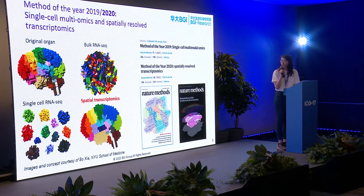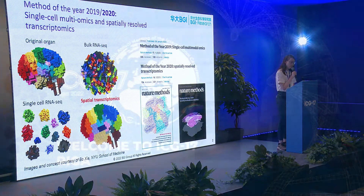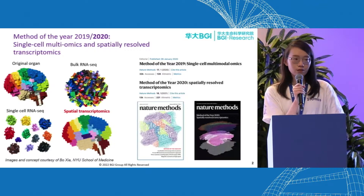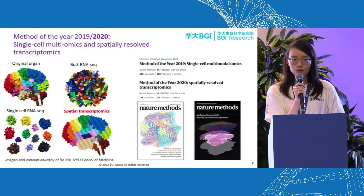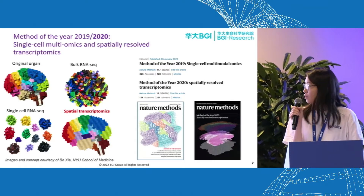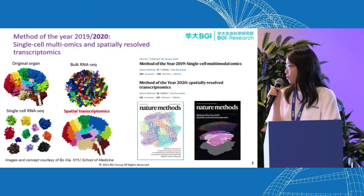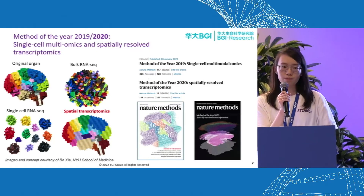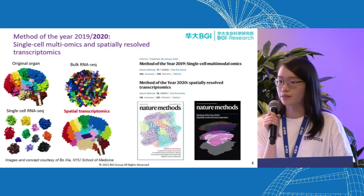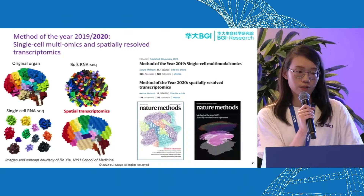So just to give a very quick introduction — we all know why spatial transcriptomics is a very important method, because understanding all the different cell types and also the organization within the tissue is very important in life science research. This is also why spatially resolved transcriptomics was selected as the method of the year 2020.